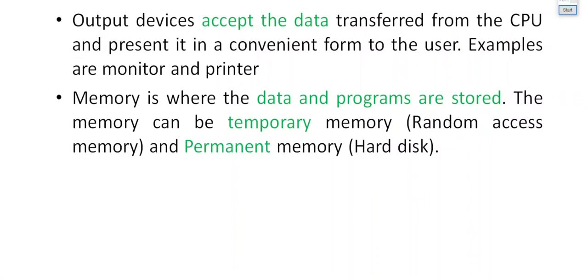Memory can be main memory or secondary memory — otherwise called RAM (Random Access Memory) and hard disk. RAM is temporary memory, also called main memory, while secondary memory is permanent memory implemented as a hard disk. So in technical terms, a computer has two kinds of memory: RAM and hard disk.